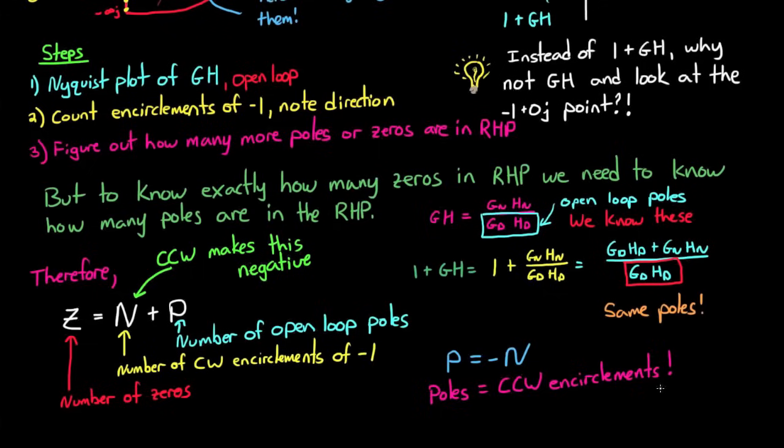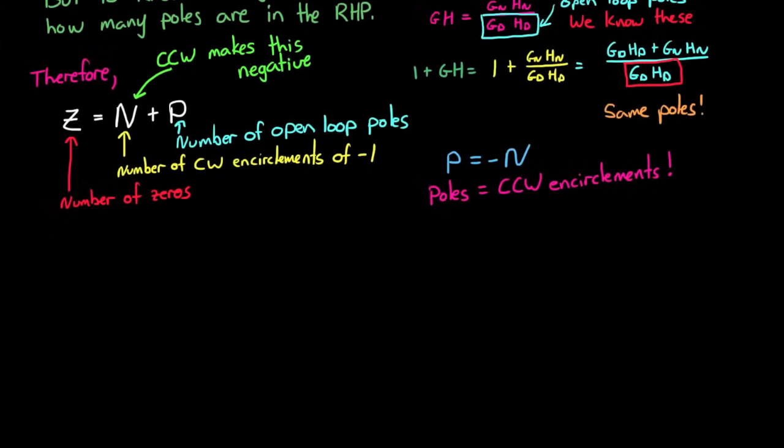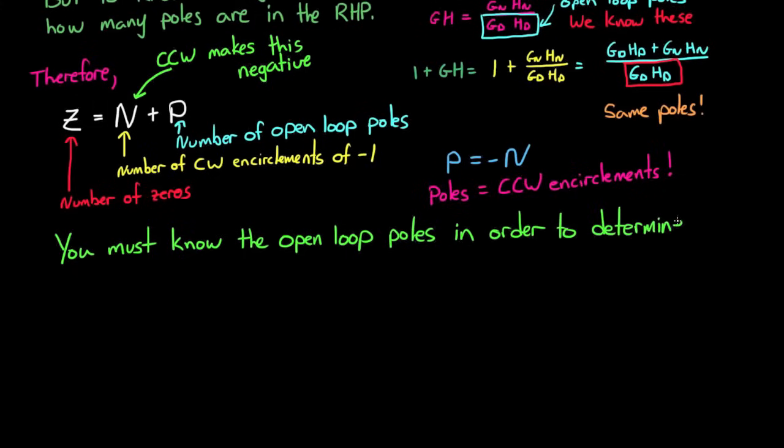Any less than that, and you know you have at least one right half plane zero messing things up. So one very important bit of information you should be taking away from this is that if someone gives you a Nyquist plot and asks you to tell them how many zeros are in the right half plane of 1 plus GH, you can't unless you know a little information about the open-loop system GH, namely how many unstable poles there are.